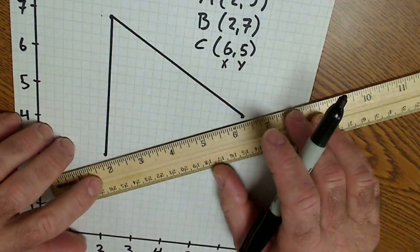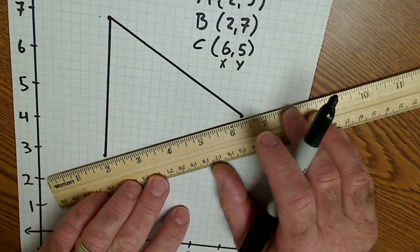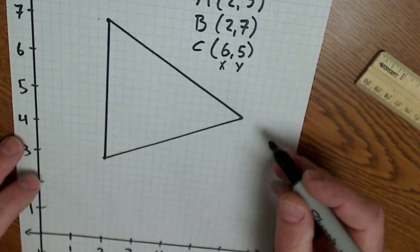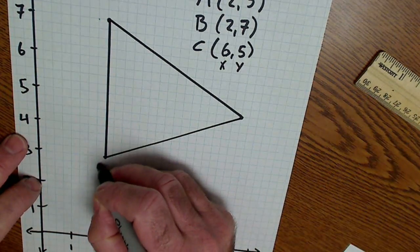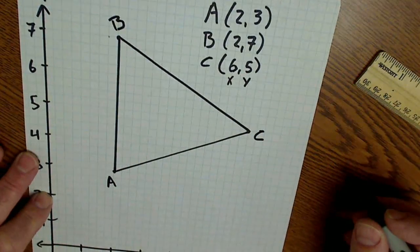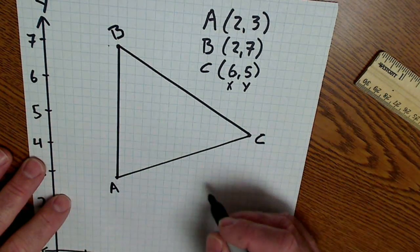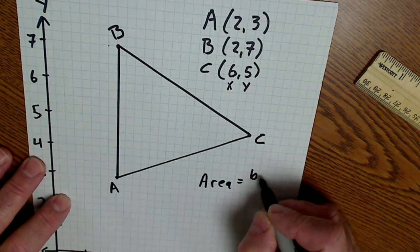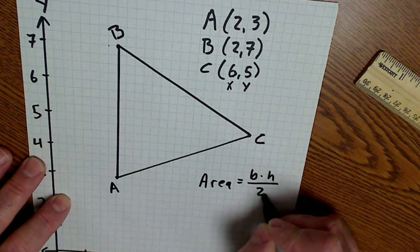And let's say the first question is find the area of this triangle. So this would be triangle ABC. This is point A, point B, point C. The area of a triangle is base times height divided by 2.